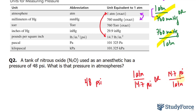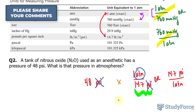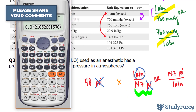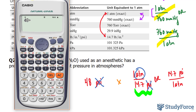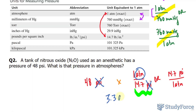Now you tell me, which of these two will you use? I hope you chose the first one, because if you multiply 48 by the version with 1 atmosphere per 14.7 psi, you have psi at the top and psi at the bottom, which cancel out, leaving you with atmosphere at the top — and that's exactly what you want. So 48 divided by 14.7, and we get to two significant figures: 3.3 atmosphere.